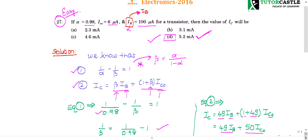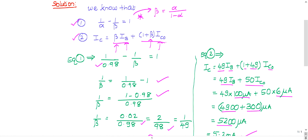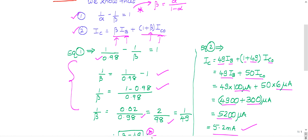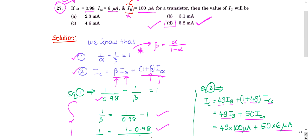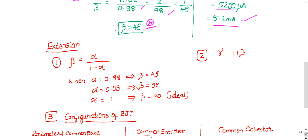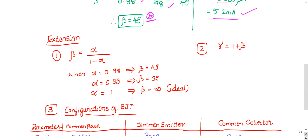Now let's see the extensions and formulas for similar concepts that could be asked. Calculating beta from alpha takes nearly one minute, but in the ISRO exam there are 90 questions with 90 minutes duration — so you need to solve each question in about one minute. So if alpha is given, you should be able to state beta within one second.